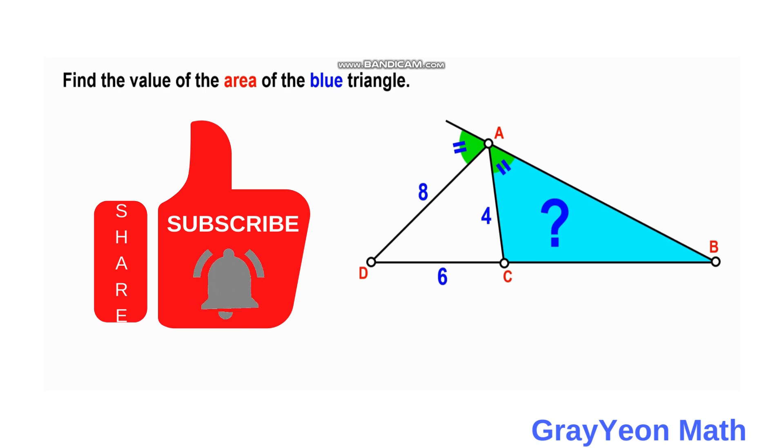we have this unshaded triangle ADC and the shaded triangle ABC. The dimensions for ADC are 8, 4, and 6 units, and at angle A there is a pair of two congruent angles. We are required to find the area of this blue triangle.